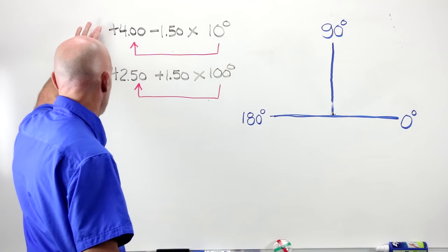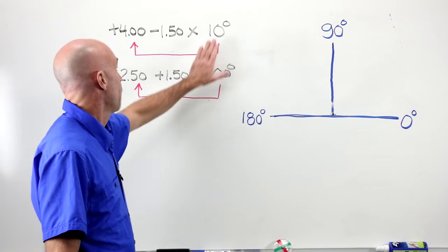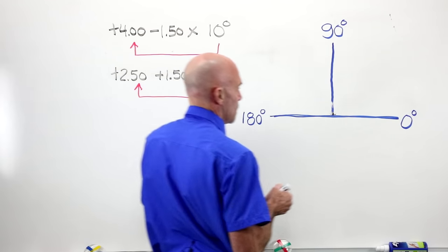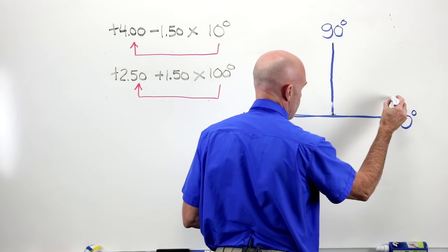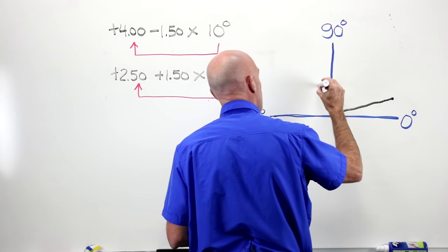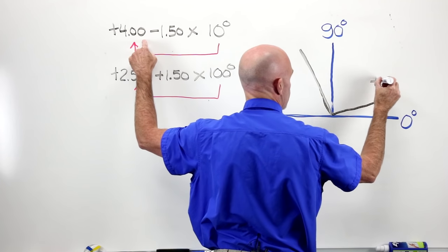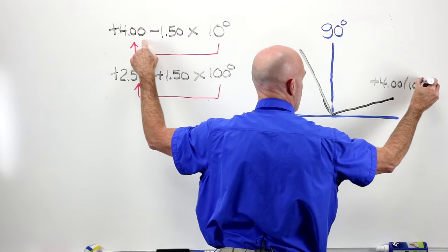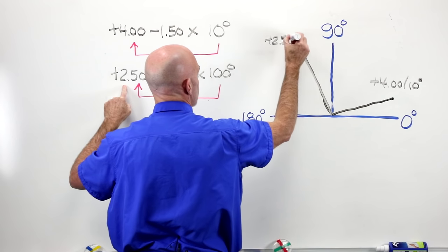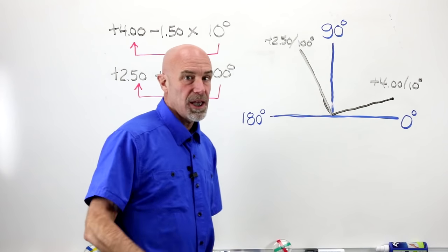Example number three, switched from minus power to plus power. It doesn't make any difference whatsoever. Power is power. At 10 degrees, I've got plus four. At 100 degrees, I've got plus 250. 10 degrees is going to be just off of my zero, about here. And my 100 is going to be just past my 90, here. At 10 degrees, I have plus four. And at 100 degrees, I have plus 250.